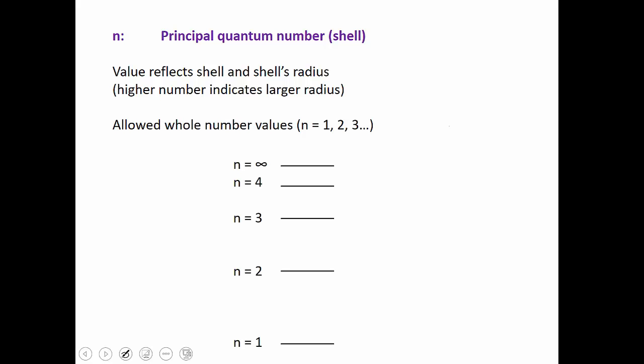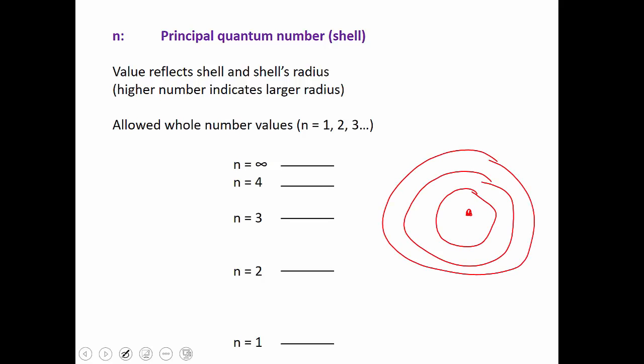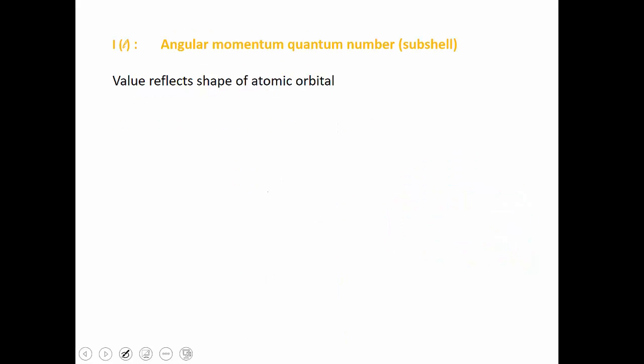If our nucleus is at the center, as we get farther away from it our N values are increasing. As those N values increase, the electrons can get further away from the nucleus and they have higher energy values. Within each shell we have a subshell — or within each level, a sublevel. The second quantum number, L, defines which subshell we're talking about, and each subshell has a different characteristic shape.